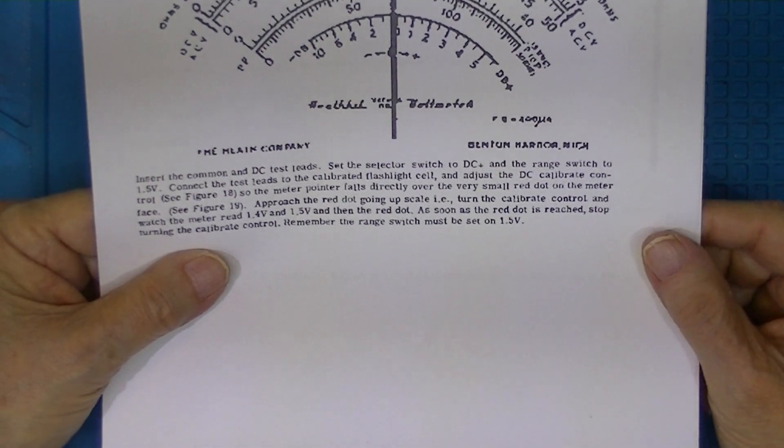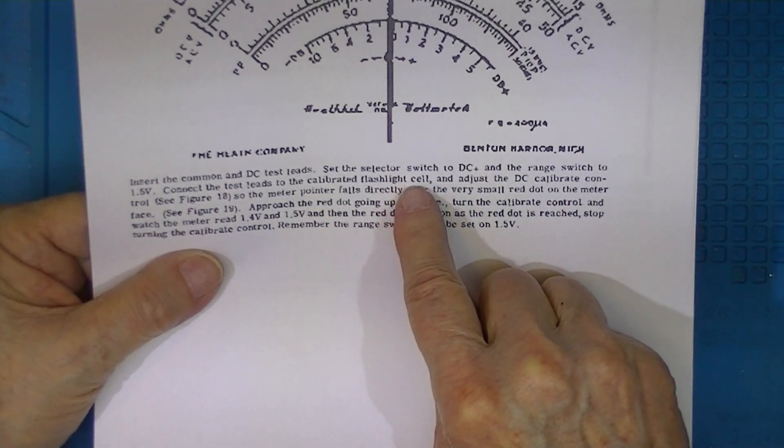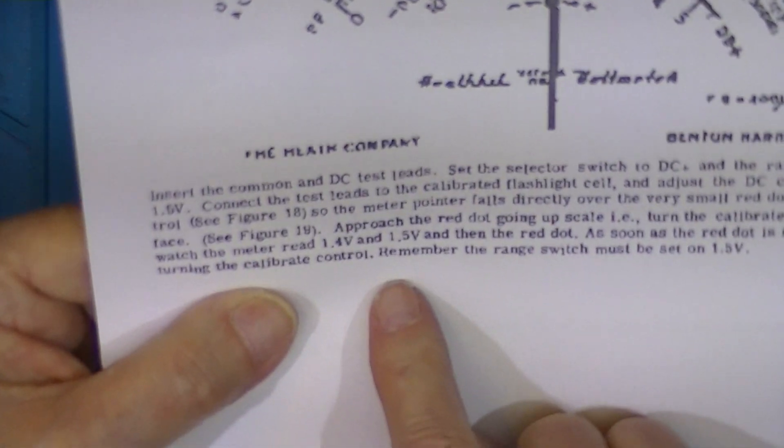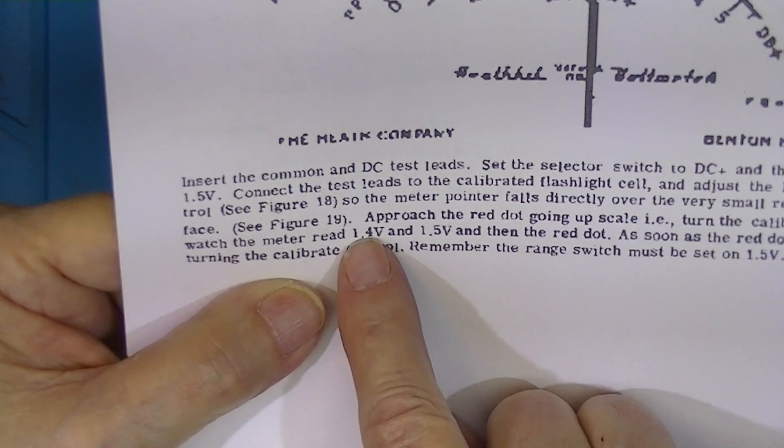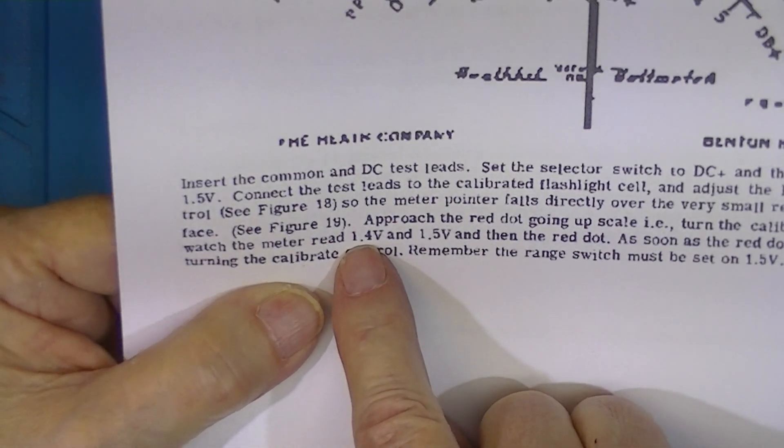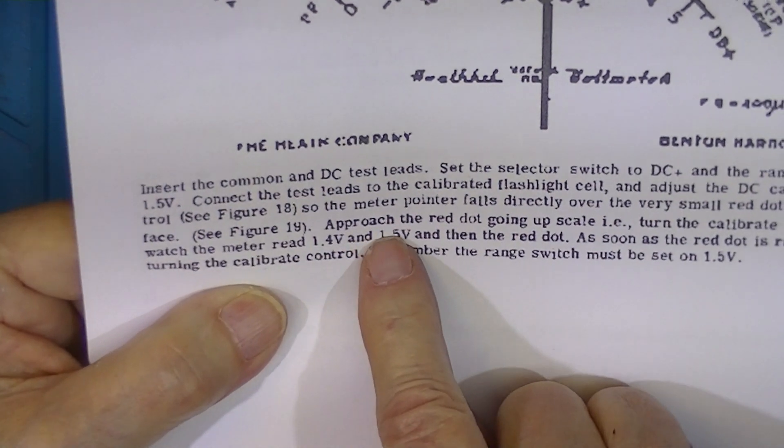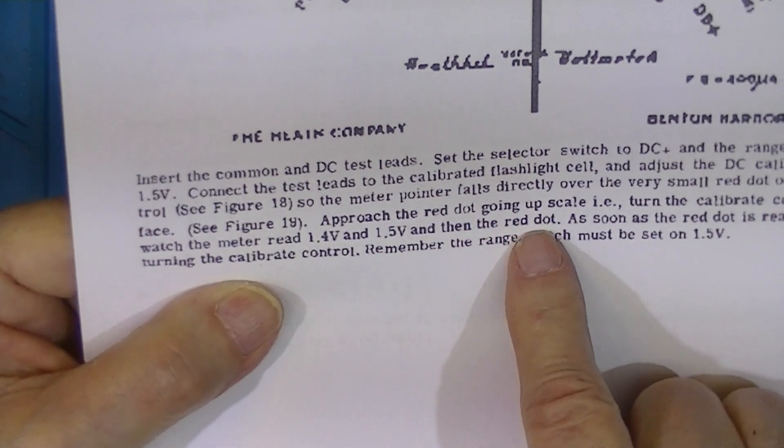So the instructions were to take a flashlight cell, turn the meter down using the calibration pot, turn it up to 1.4, 1.5, and then the red dot.